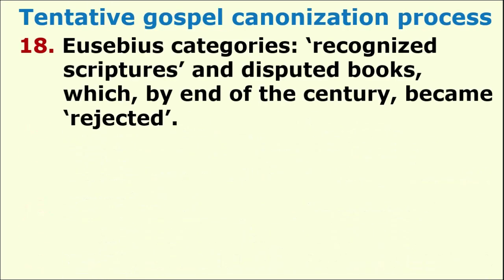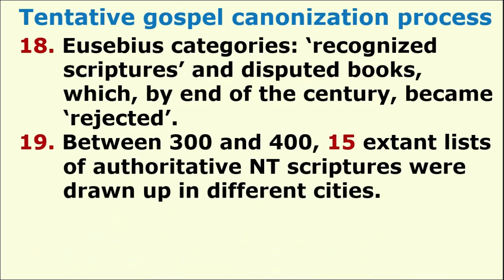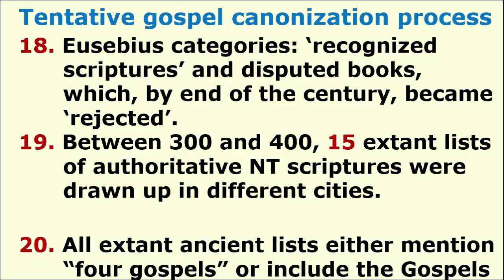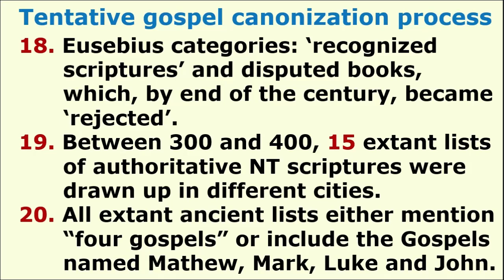Step 18: Bishop Eusebius had two categories of books — first, recognized scriptures, and disputed books, which by the end of the century became the rejected books. Between the years 300 and 400, no fewer than 15 extant lists of authoritative New Testament Scriptures were drawn up in different cities. All extant ancient lists either mention the four Gospels or include the Gospels by name: Matthew, Mark, Luke, and John.